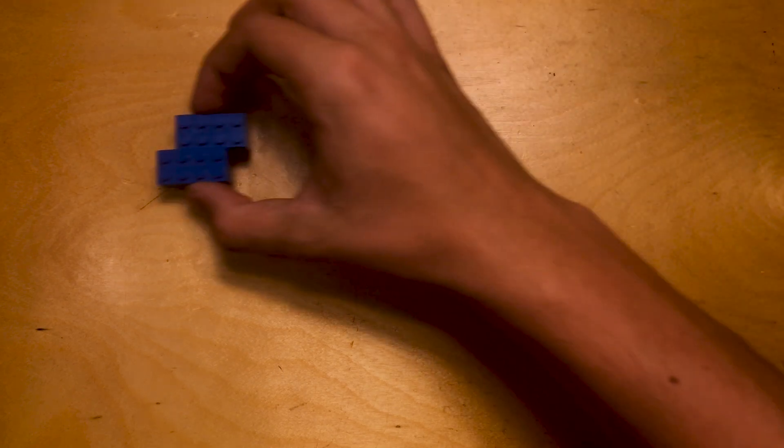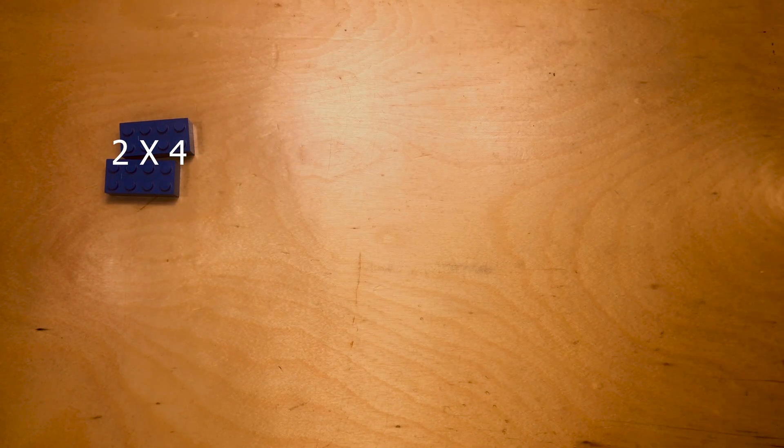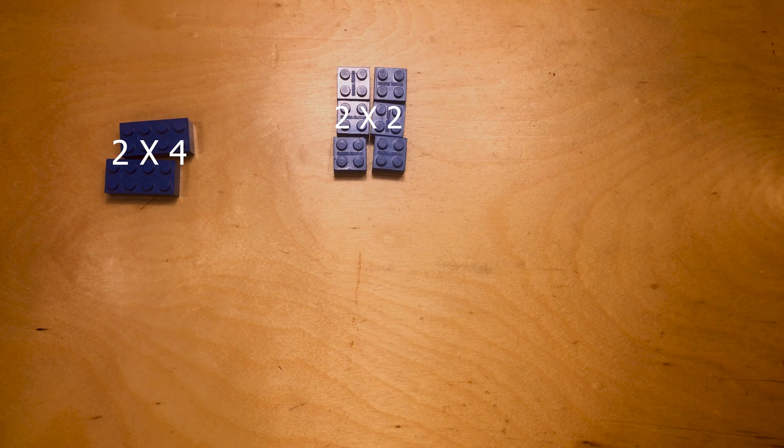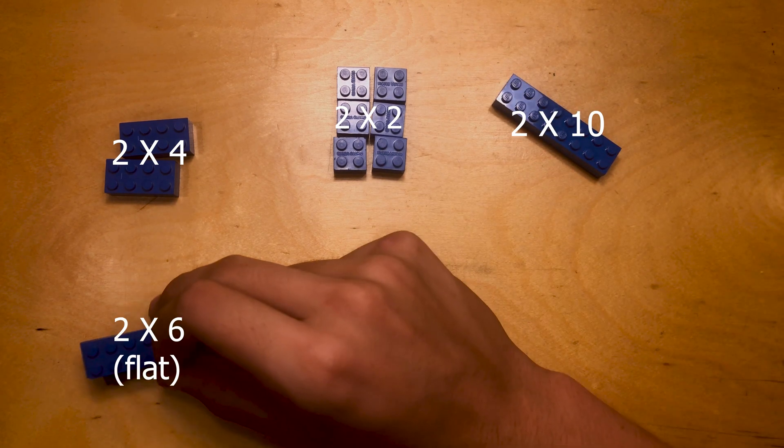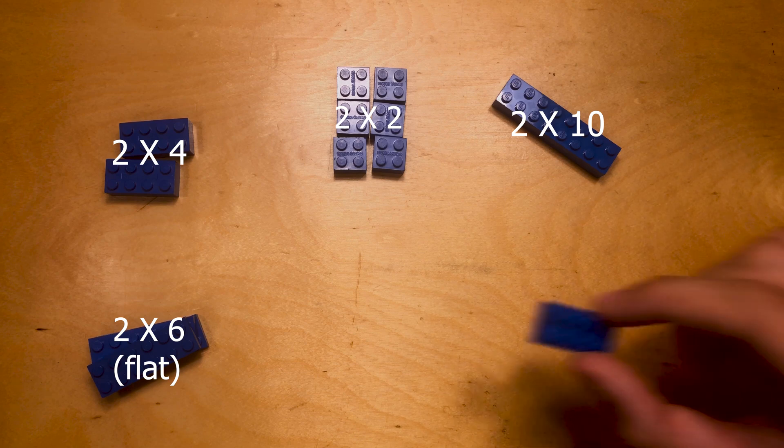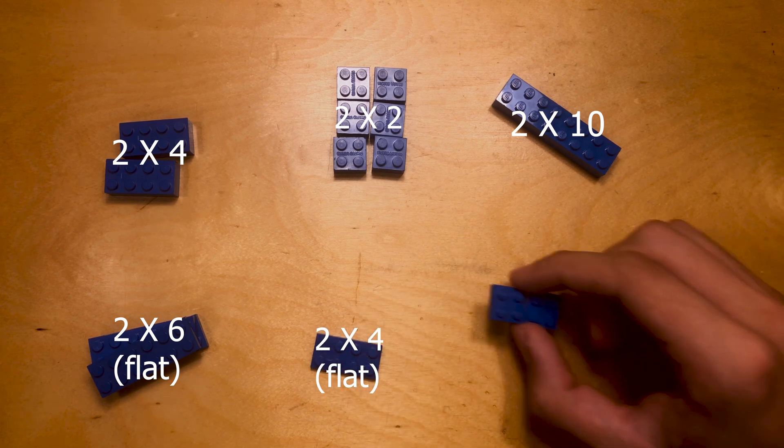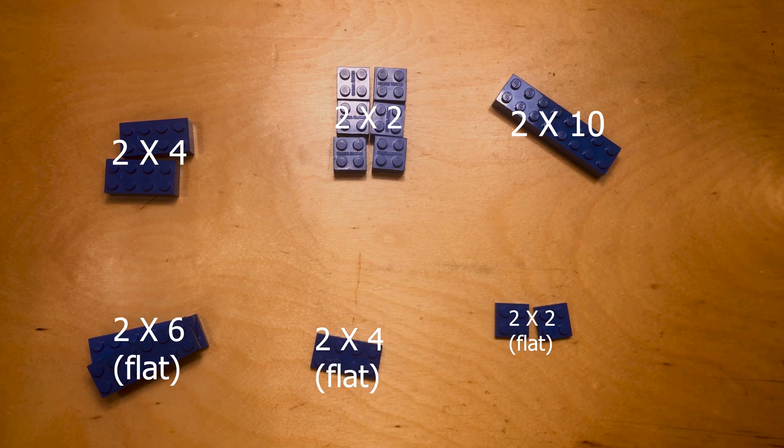Here are the pieces that you need to make your Lego impossible triangle and it's recommended that all of these pieces are one color. So you're gonna need two 2x4s, six 2x2s, a 2x10, three flat 2x6s, a flat 2x4, and two 2x2s. That's a tongue twister.